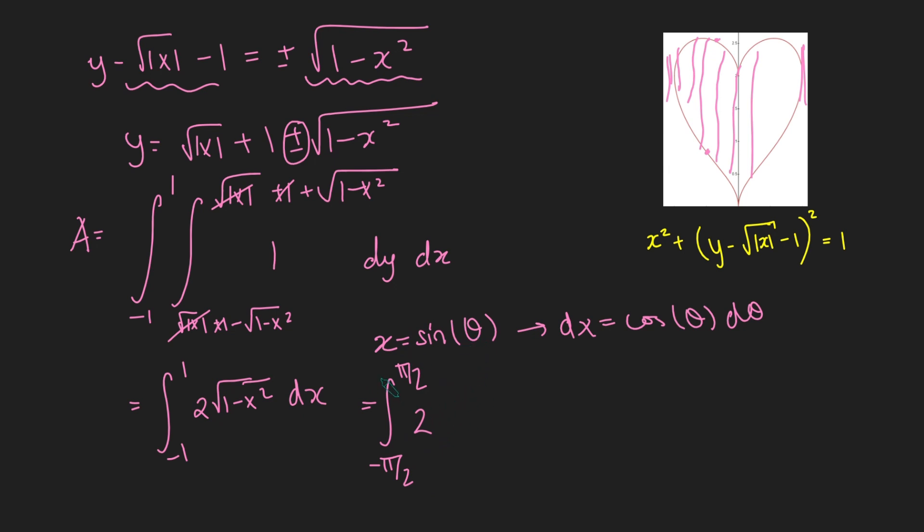And we don't have to worry about pluses or minuses here because cos theta is positive in this interval here. And then dx is just cos theta again. So we get 2 cos squared theta d theta.